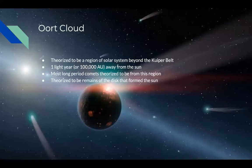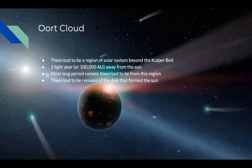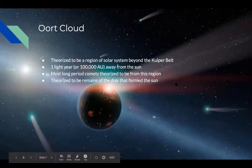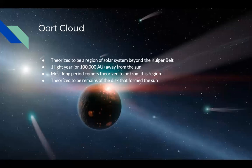Lastly, there is the Oort cloud — pronounced 'Oort.' Nobody knows whether or not this exists for certain. This is a theoretical region of the solar system that lies beyond the Kuiper belt. It lies one light year, or 100,000 astronomical units, away from the sun. AU stands for astronomical unit. Everyone refer to the chat.